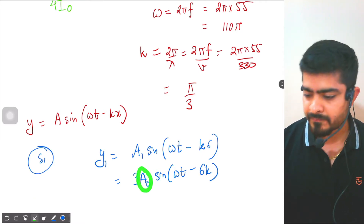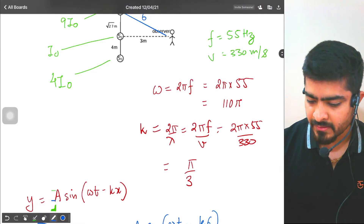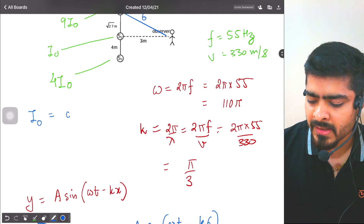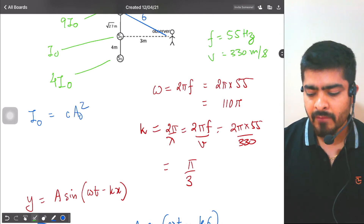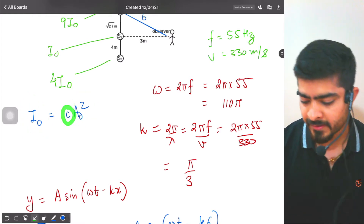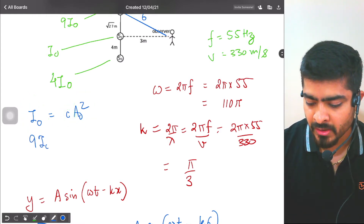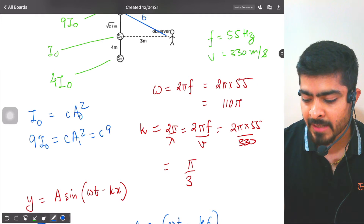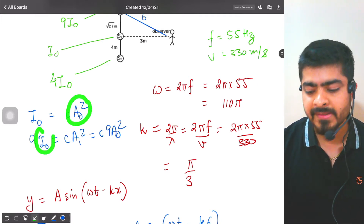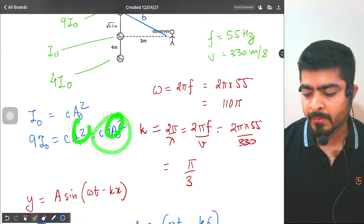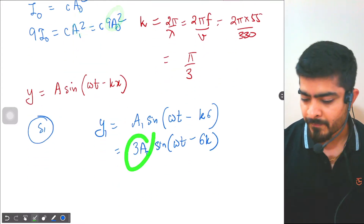Since intensity is proportional to the square of amplitude, I₀ = c·a₀². For 9I₀: c·a₁² = c·9a₀², so a₁ = 3a₀. Therefore: y₁ = 3a₀ sin(ωt − 6k).